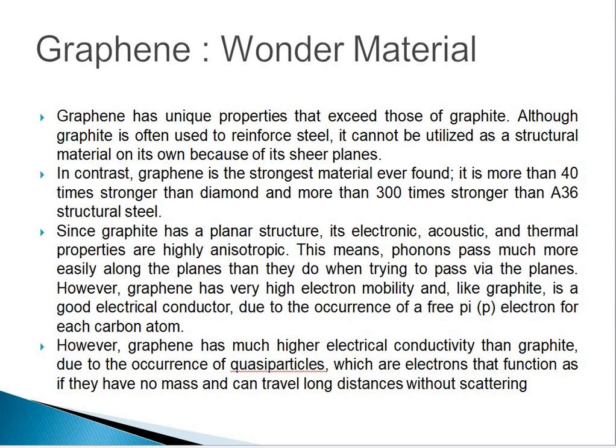However, graphene has much higher electrical conductivity than graphite, due to the occurrence of quasiparticles — electrons that function as if they have no mass and can travel long distances without scattering. Graphene has a number of advantages over graphite, such as superior electrical conductivity due to the occurrence of these quasiparticles.